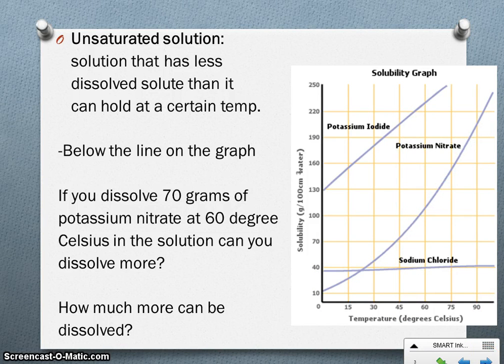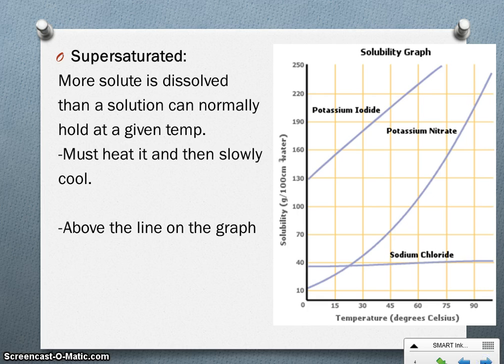The third instance that could happen is you could have a supersaturated solution, meaning that it's actually holding more than it normally could. Now in order to have more solute dissolve than it normally can hold, you have to actually heat that up. We use this process a lot in making candy. So in order to get a lot of sugar dissolved into a liquid, we heat it up, and then when we cool it down, that sugar stays in solution, meaning that it's supersaturated. It's holding more sugar than it normally would.